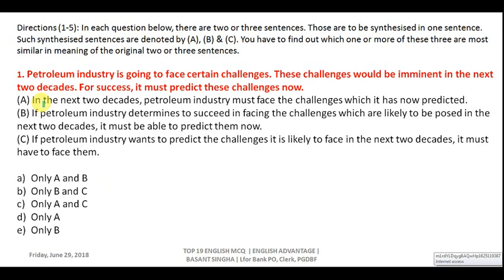Now we move to sentence synthesis questions, which are very prevalent in banking exams. One sentence is given and you must synthesize it into another form closest in meaning. The original sentence: 'Petroleum industry is going to face certain challenges; these challenges would be imminent in the next two decades; for success it must predict these challenges.' Option A says 'which it has now predicted' — but the sentence says 'it must predict,' so there is a difference. Option A is incorrect.